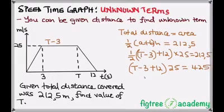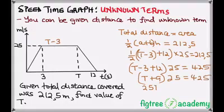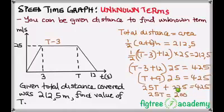I will further simplify the bracket. This will be T plus 9 times 25 equals 425. Expanding is 25T plus 225. 9 times 25 is 225.